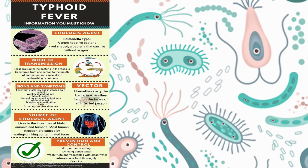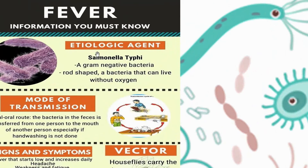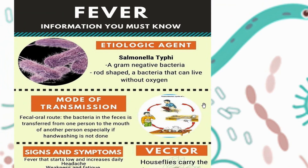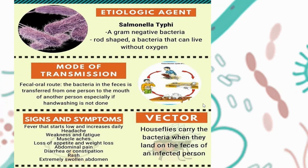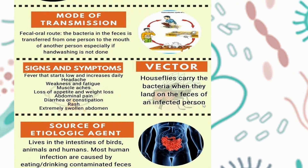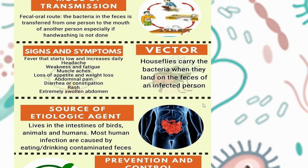To summarize: typhoid fever is caused by Salmonella typhi, a gram-negative, rod-shaped, anaerobic bacteria. The mode of transmission is through the fecal-oral route. Signs and symptoms include fever, headache, weakness and fatigue, muscle aches, loss of appetite, weight loss, abdominal pain, rashes, and swollen abdomen. House flies act as vectors.